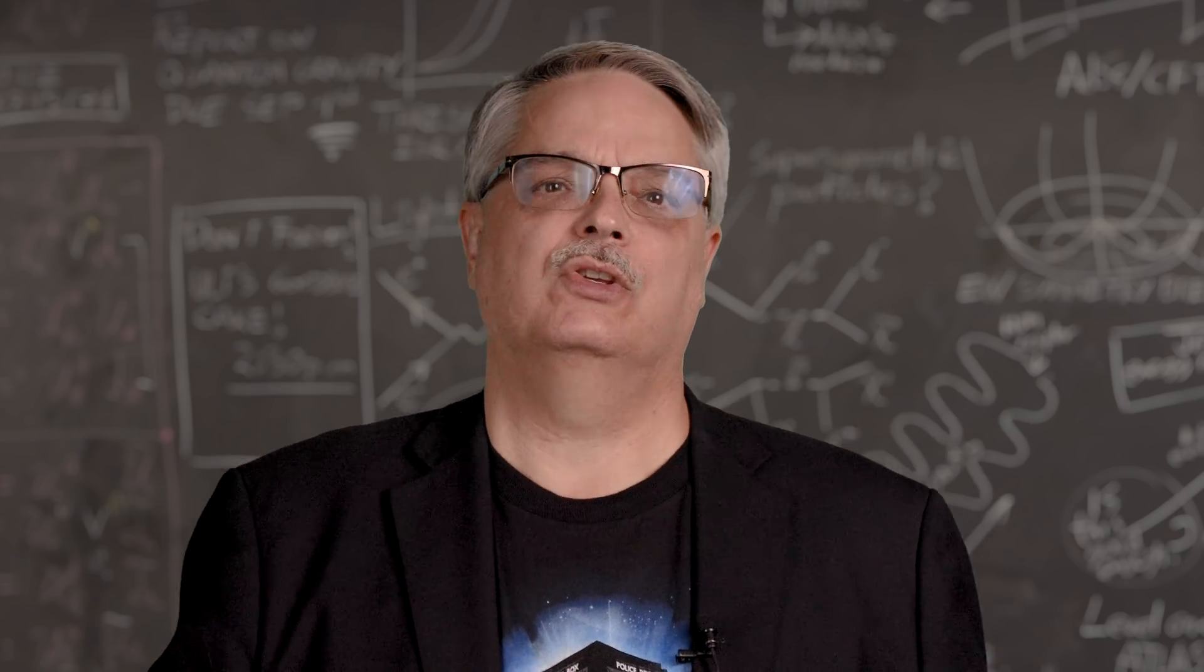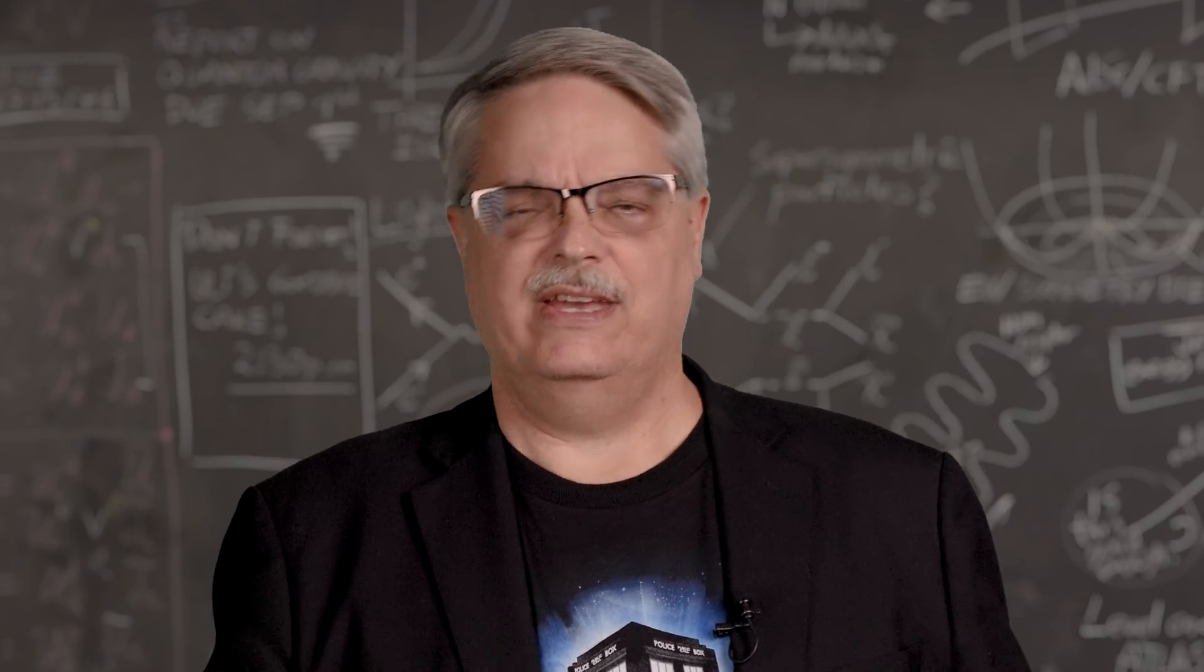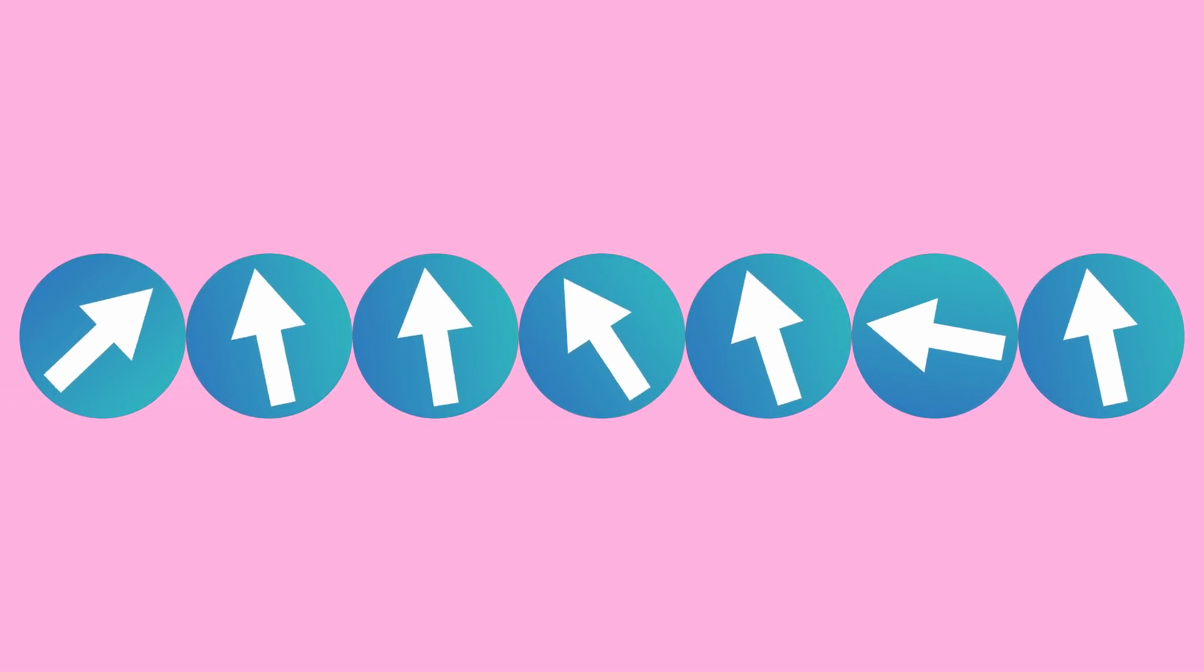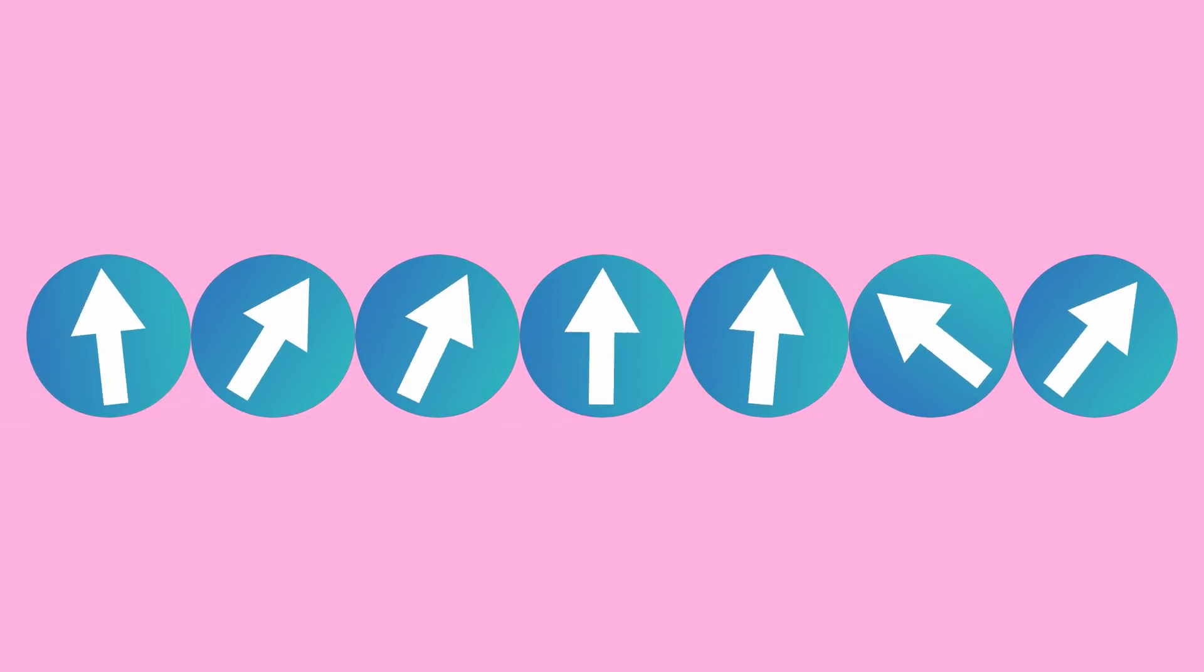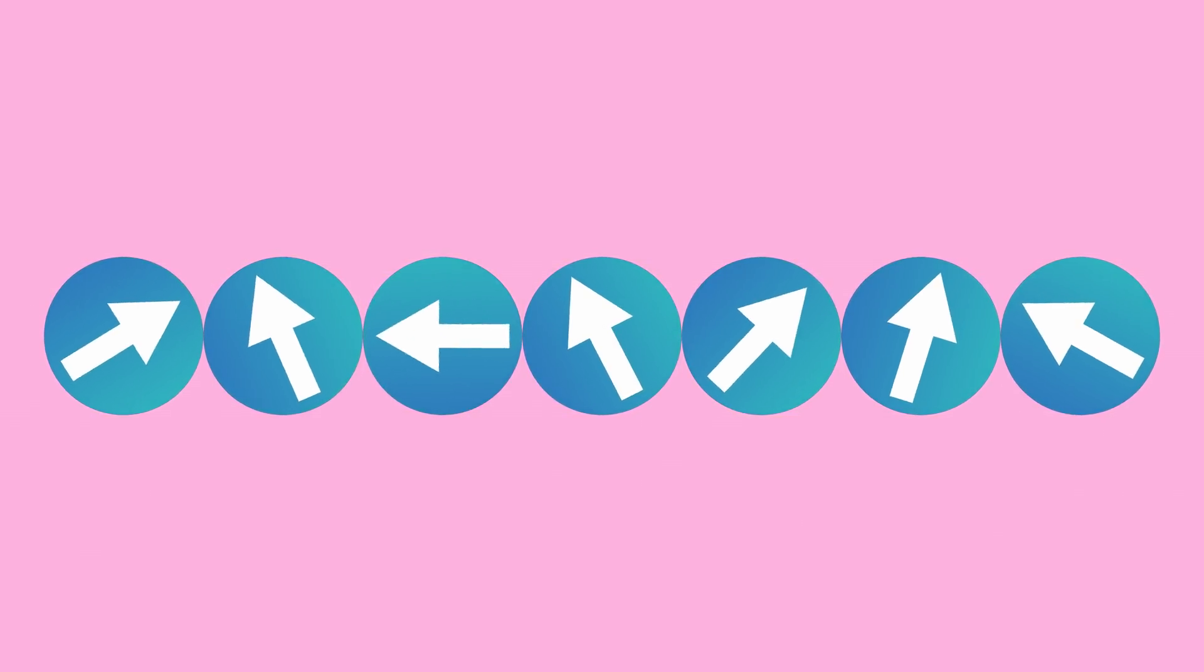So what does a time crystal look like? Well, different groups have made different versions. I'll show you one to give you the idea. Suppose you had a string of atoms arranged like on a pearl necklace. Each atom has a spin associated with it and these arrows represent the spin axis.